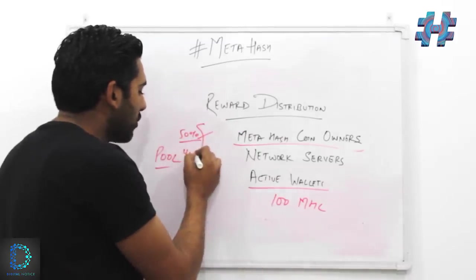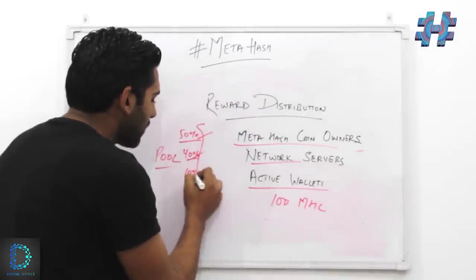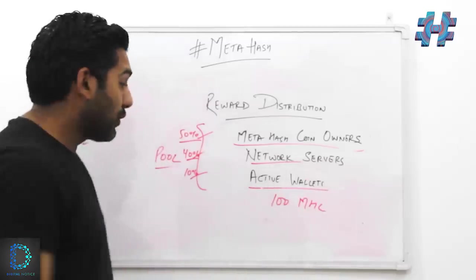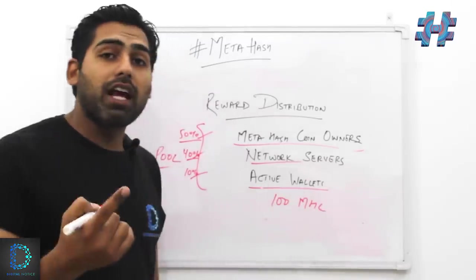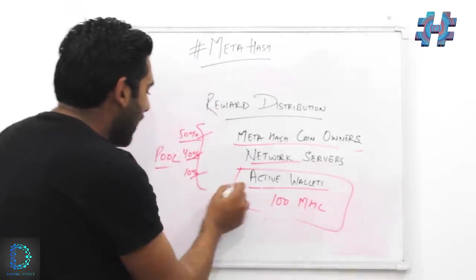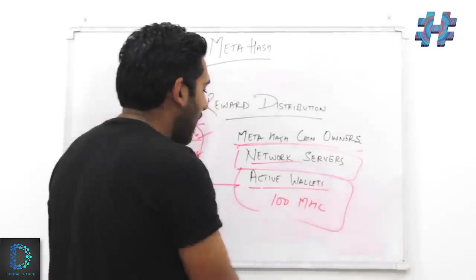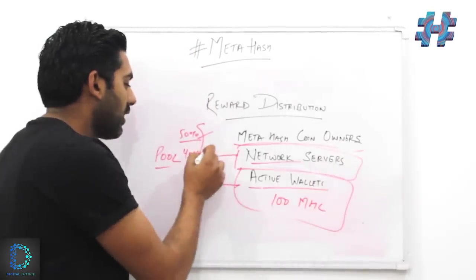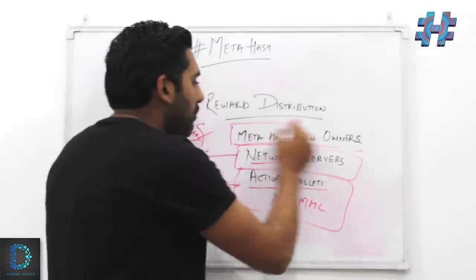The share percentage of all these three are: 50% of the rewards goes to MetaHash coin owners, 40% goes to network servers, and 10% goes to active wallets. So you can have a wallet, keep at least 100 MetaHash coins in them, and you can claim your commission out of this share. You can set up a node and claim your commission from this share.